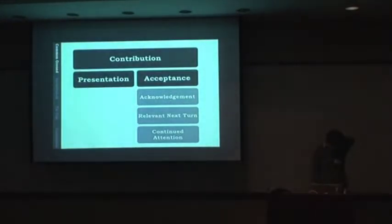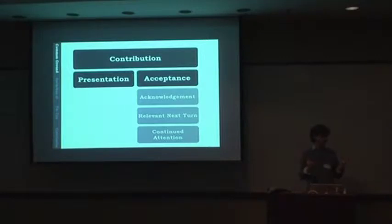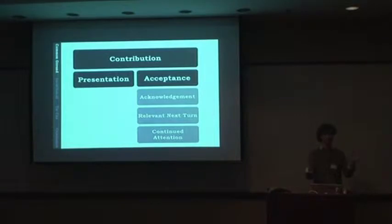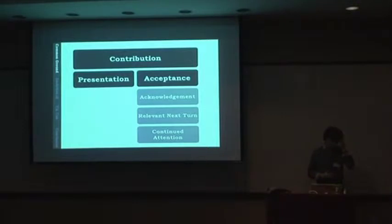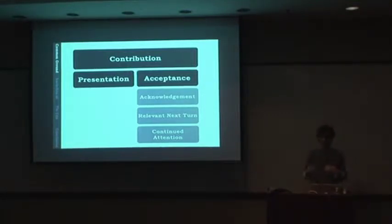The simplest model would be: I say a thing to you, you say you understand, and I say I understand that you understand—because we have to get that mutualness. But that takes a lot of time and it's infinitely recursive. We can't just keep going back and forth doing that. So Clark puts together a system where he models things as a contribution, and a contribution has two parts: a presentation and an acceptance. A presentation is just the thing I'm trying to communicate—if I say I'm going to lunch, that's my presentation. But I also need to know that you received it.